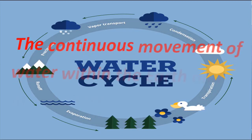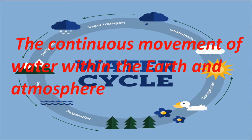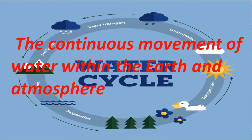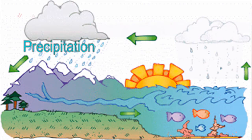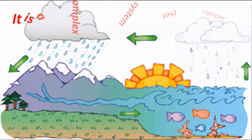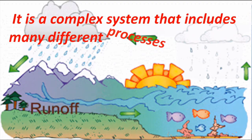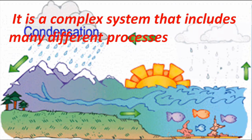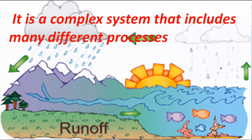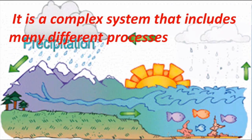Water cycle. The continuous movement of water within the earth and atmosphere is called the water cycle. It takes place through various processes. It is a complex system that includes many different processes like evaporation, condensation, precipitation, and flow of water.